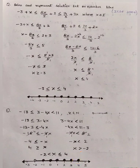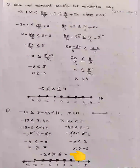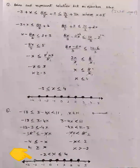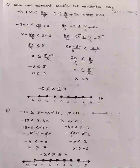Now we merge both solutions: x > −2 (the smallest) and x ≤ 4 (the greatest). To represent the solution on the number line, we mark −2 with a hollow circle due to the absence of the equal-to sign, and 4 with a dark circle. We then highlight all natural numbers lying between −2 and 4 with dark circles.